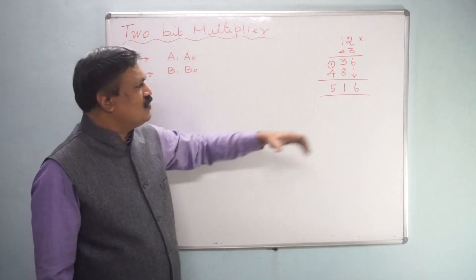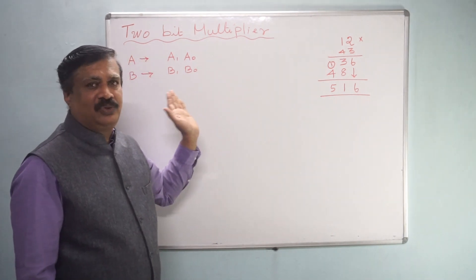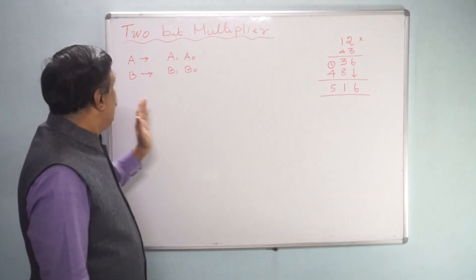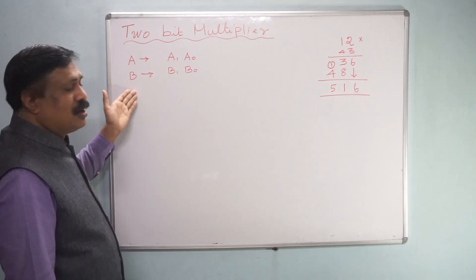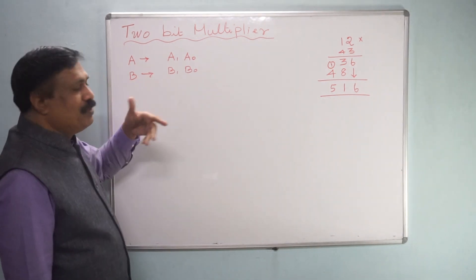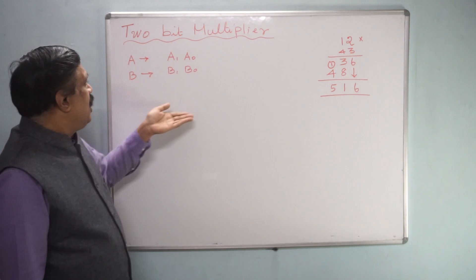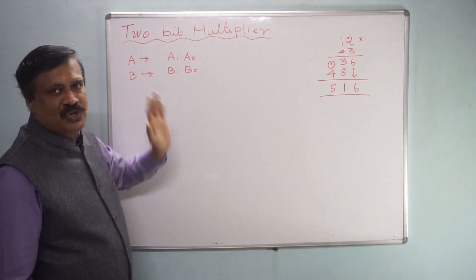Now we are going to implement the same pattern here in 2-bit binary number. Let us take number A and number B and let A be 2-bit number, therefore A0, A1 and B, B1, B0.